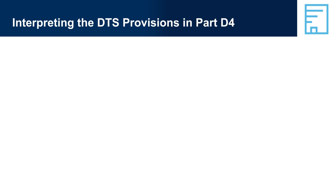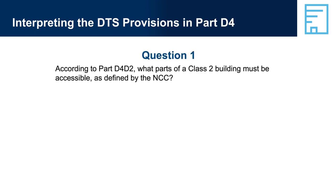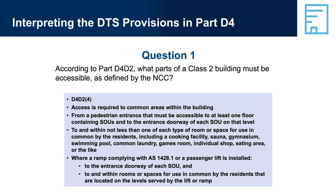Interpreting the DTS provisions in Part D4. Question 1: According to Part D4-D2, what parts of a Class 2 building must be accessible as defined by the NCC? Answer: D4-D2-4 — Access is required to common areas within the building, from a pedestrian entrance that must be accessible, to at least one floor containing SOUs and to the entrance doorway of each SOU on that level; to and within not less than one of each type of room or space for use in common by the residents, including a cooking facility, sauna, gymnasium, swimming pool, common laundry, games room, individual shop, eating area, or the like. Where a ramp complying with AS 1428.1 or a passenger lift is installed, access is also required to the entrance doorway of each SOU and to rooms or spaces for use in common by residents on levels served by the lift or ramp.